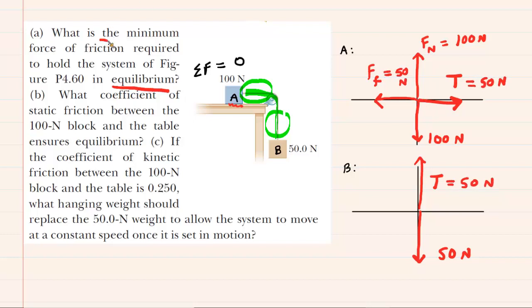And indeed, that is the answer to part A. Part A wanted the minimum force of friction required to hold the system in equilibrium. So that force of friction is going to be 50 newtons. That is the correct answer to part A of this question.